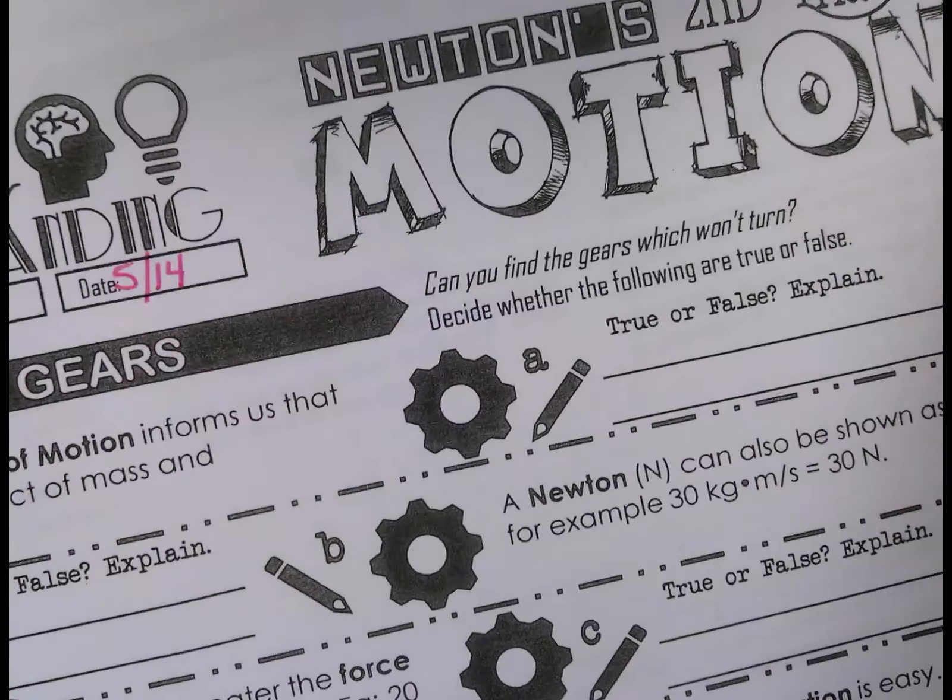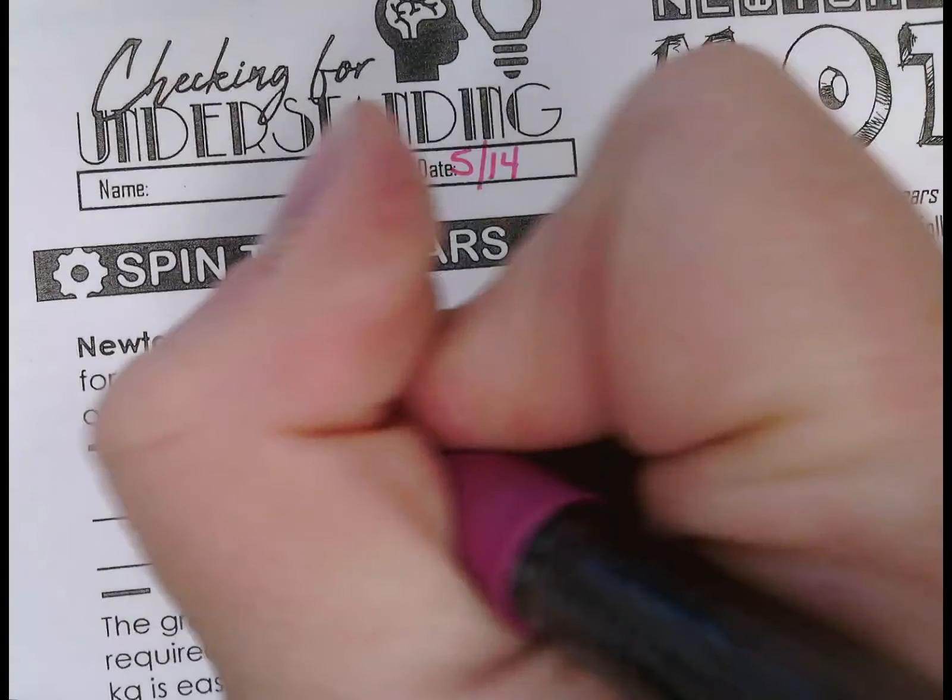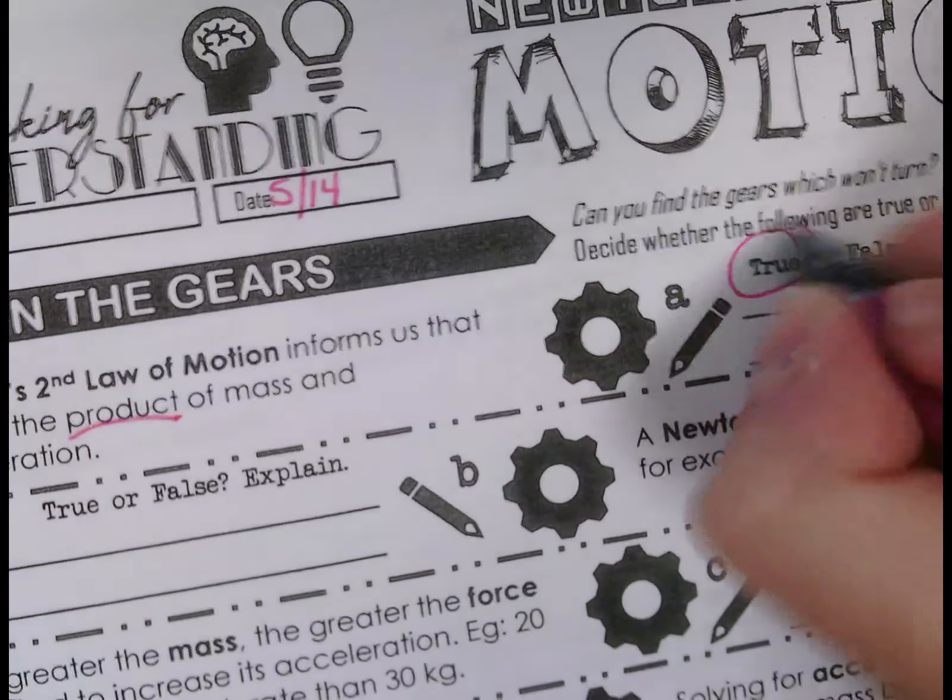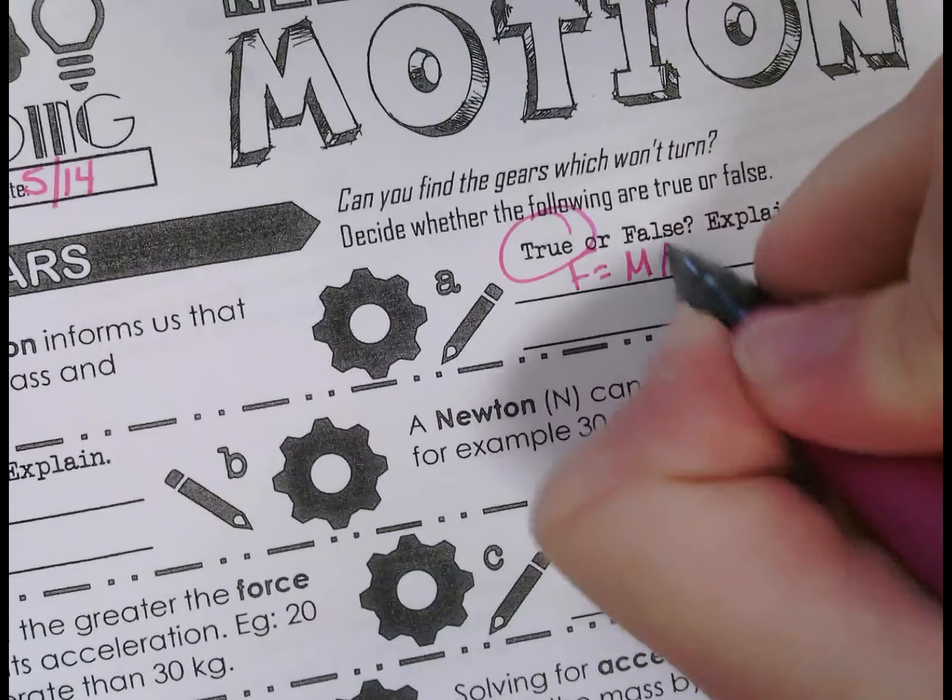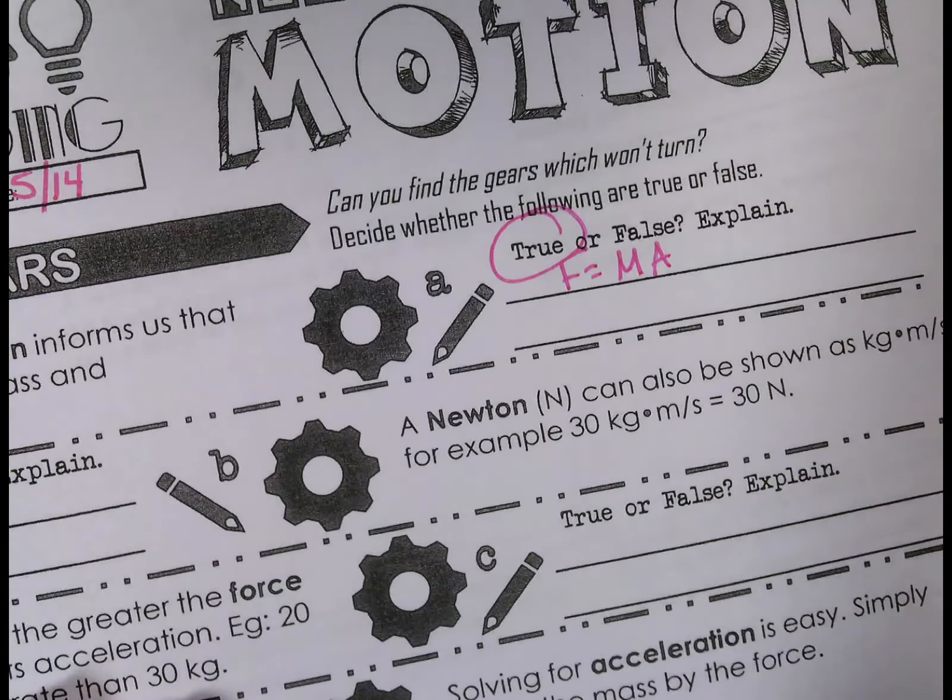So Newton's second law of motion, the abbreviated version of it is force equals mass times acceleration. The larger mass of an object, the more force is required to accelerate it. Newton's second law of motion informs us that force is a product of mass and acceleration. Product is a wonderful math word, meaning multiplication. So this one is true. F equals ma.